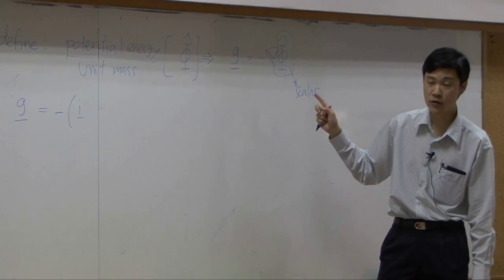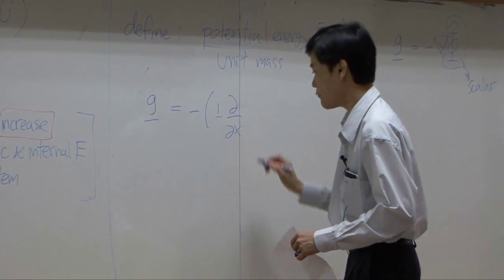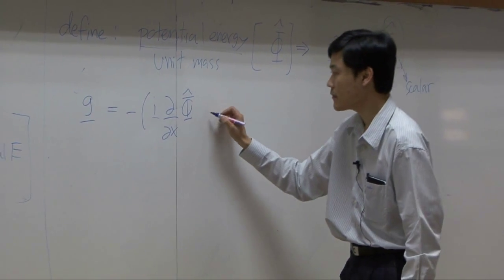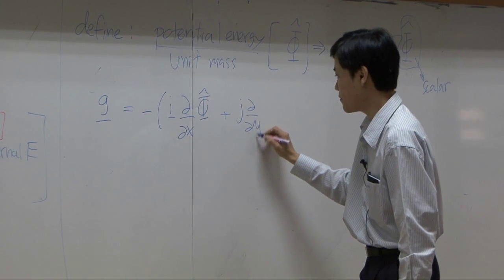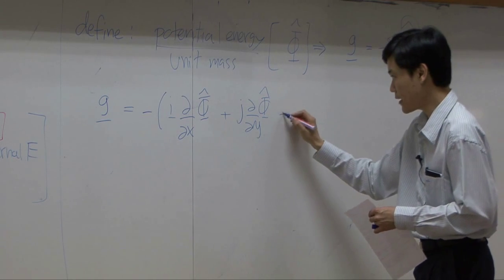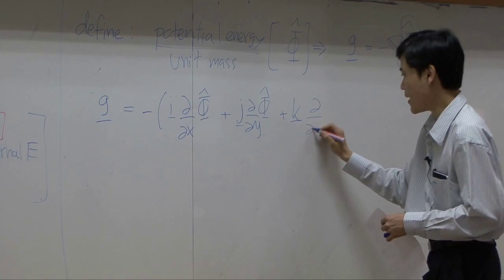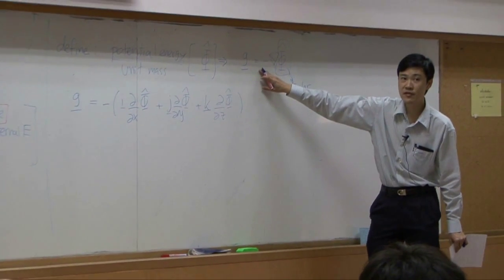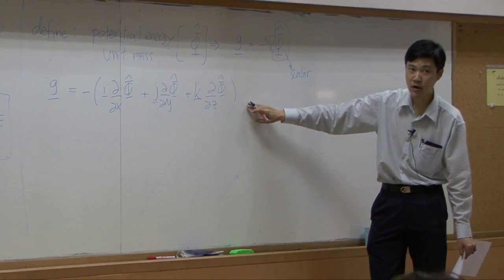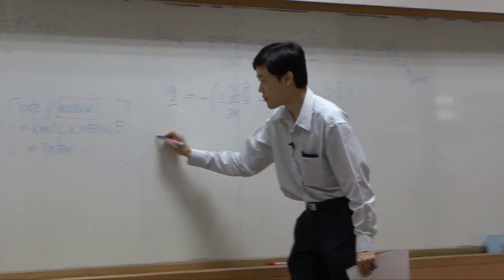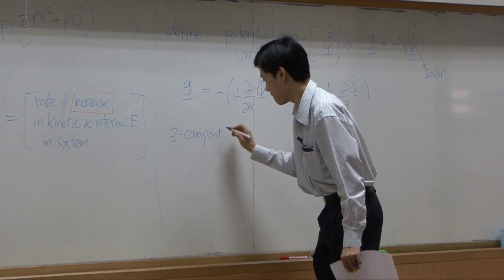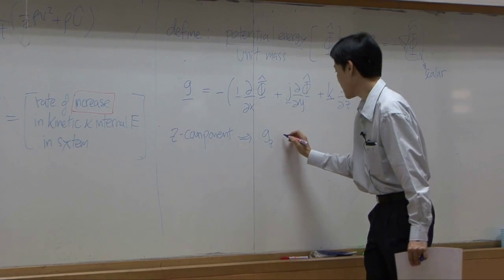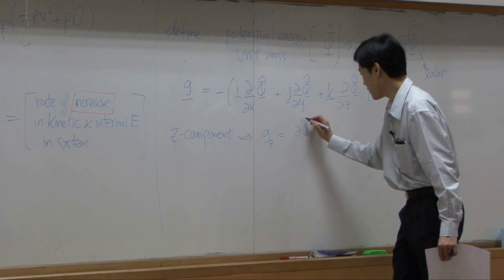So if I write it down for Cartesian coordinates, del would be i times the partial derivative with respect to x of scalar phi, plus j times del/del-y of phi, plus k times del/del-z of phi. From this definition, writing it in terms of vector operations, if you consider the z-component only, that means gz equals del phi / del z.